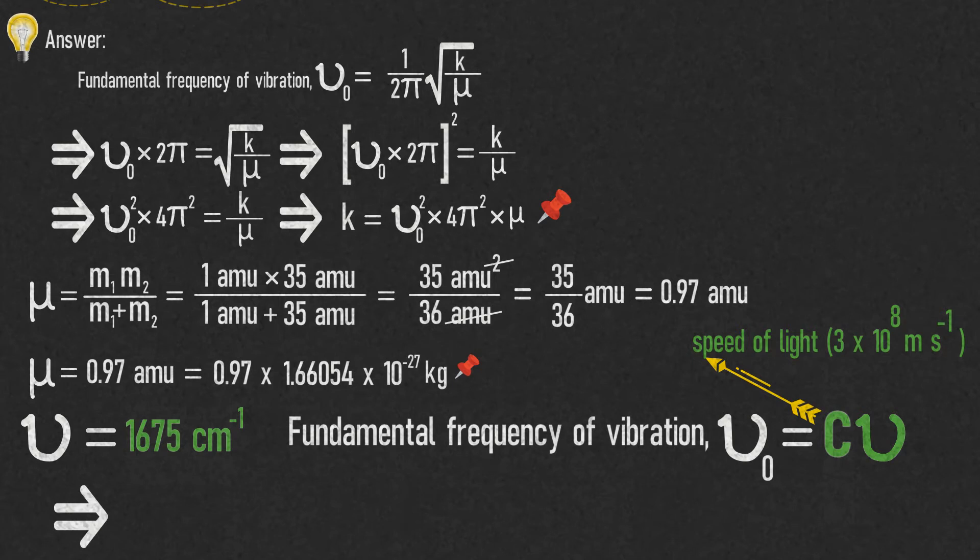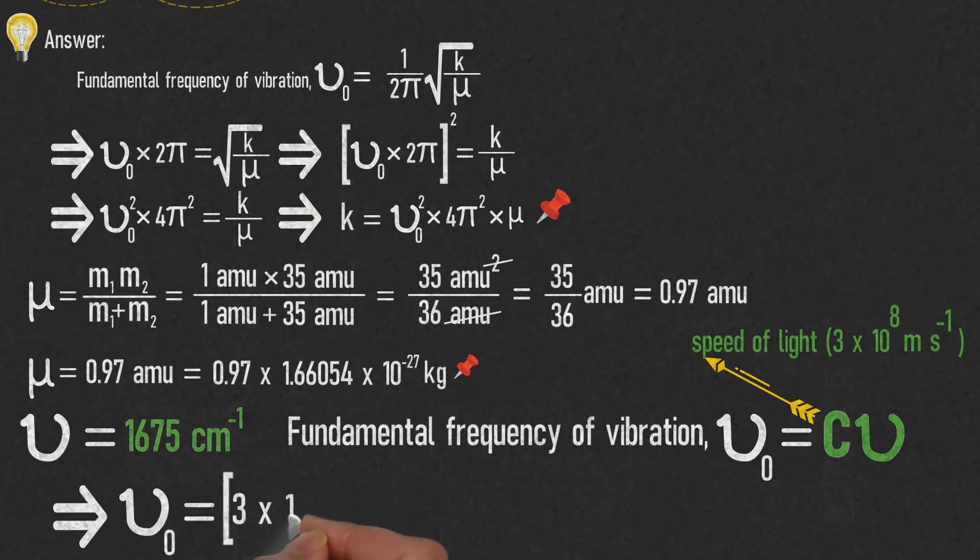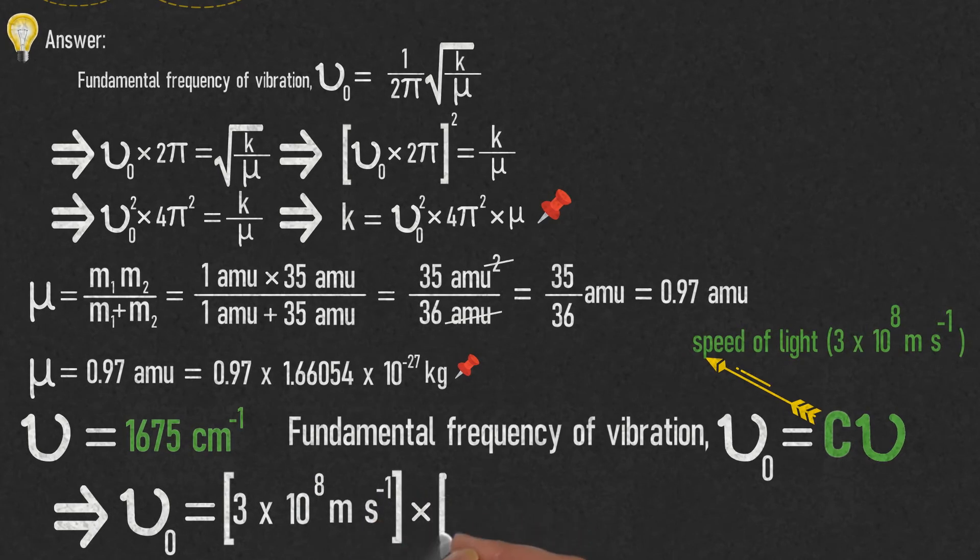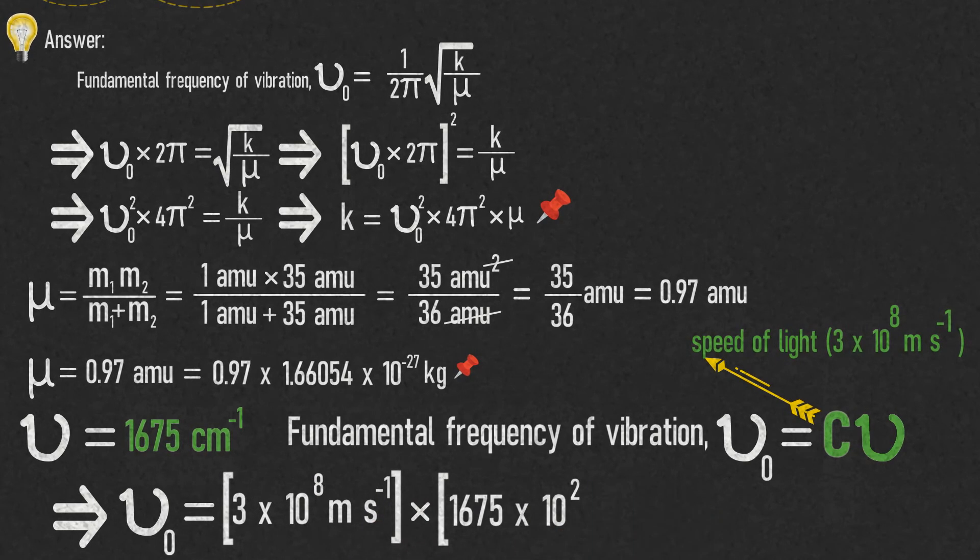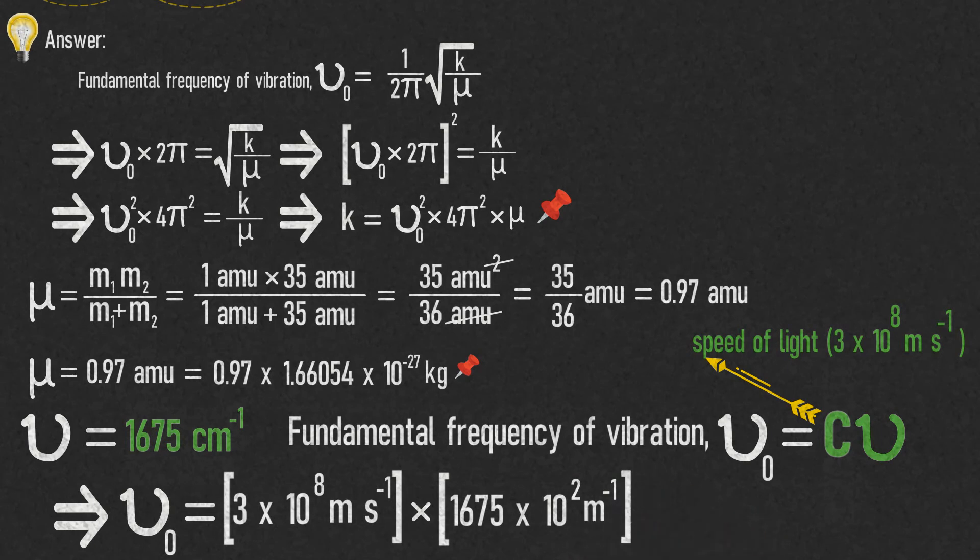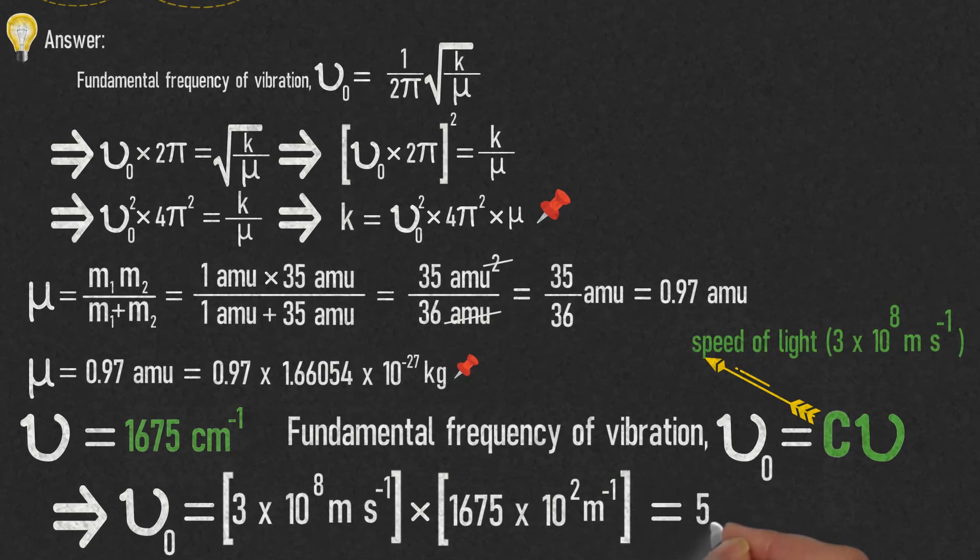Which implies ν₀ = 3 × 10⁸ m/s × 1675 × 10² per meter. That is equal to 5.025 × 10¹³ s⁻¹.